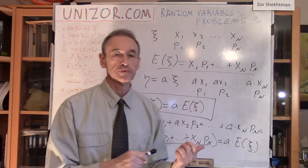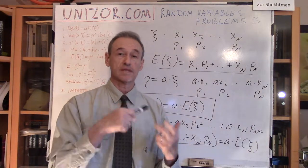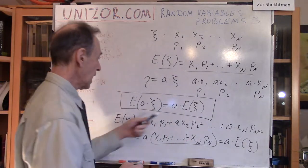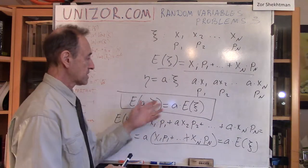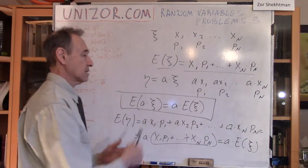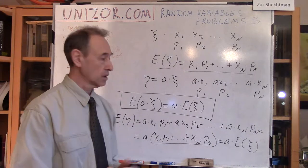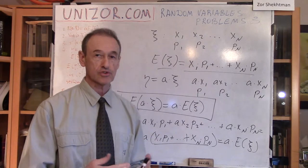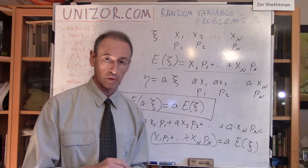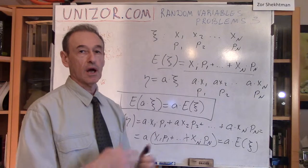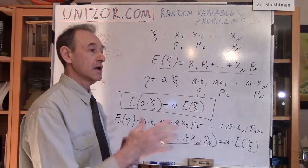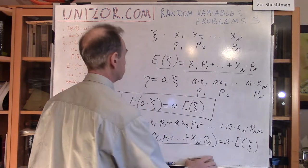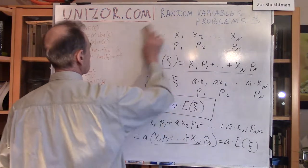I proved before that the expectation of the sum of two random variables is the sum of their expectations. Now we know that we can also multiply by a constant factor, and expectation is really behaving exactly like a linear function. Basically, expectation is a linear function of random variables, which means that any linear combination of random variables results in the corresponding linear combination of their expectations.